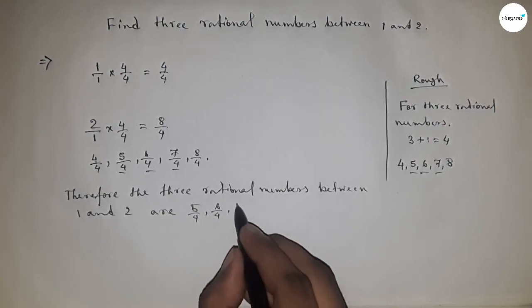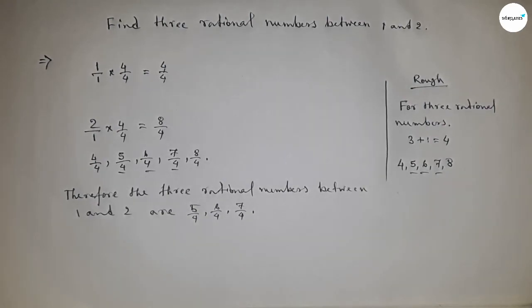This is the process to find three rational numbers between 1 and 2. That's all. Thanks for watching. Please subscribe, like, and comment on my video.